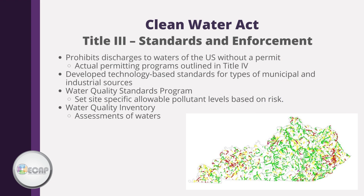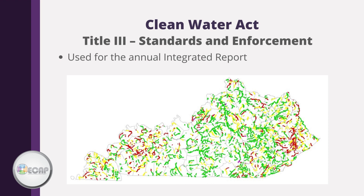Title III covers standards and enforcement. It prohibits discharges to waters of the U.S. without a permit — actual permitting programs are outlined in Title IV. It developed technology-based standards for types of municipal and industrial sources, and a water quality standards program requiring states to monitor their water bodies and establish specific allowable pollutant levels based on risk. Every year, states must submit reports describing water quality conditions to the EPA. States are required to identify waters that do not or are not expected to meet applicable water quality standards with current pollution control technologies.